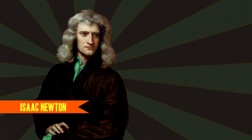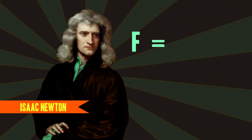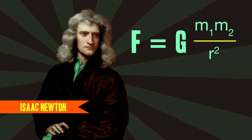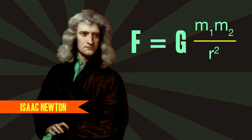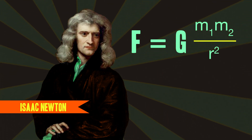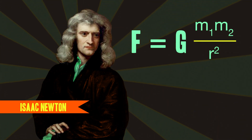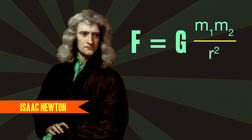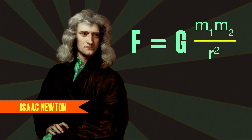The more massive an object, the greater the gravitational force it exerts on another, and the force decreases rapidly the farther apart the two objects are. Isaac described it this way: the force of gravitation is proportional to the product of the object's masses and inversely proportional to the square of the distance between them.